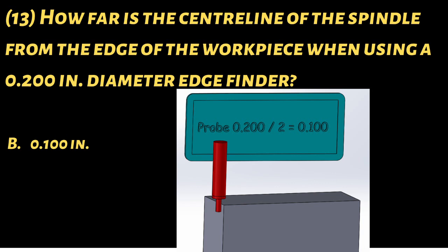Therefore when you touch off against your workpiece you need to go and zero your DRO and then move your workpiece over another hundred thou to find the center or the edge of your workpiece.